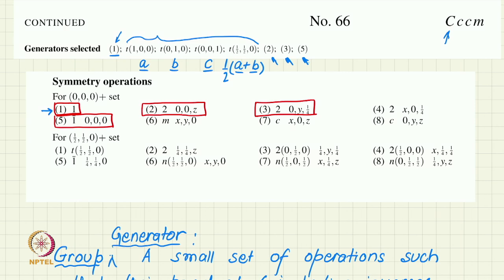Identity is not strictly necessary for generating the group since it leaves operations unchanged. However, the international tables include it as part of the generator for mathematical reasons — particularly to relate the group to its subgroups. Identity alone forms the space group P1, which is a space group where the only operation apart from translations is the identity. By convention, the first generator selected is always the identity, followed by translations, then other significant symmetry operations.